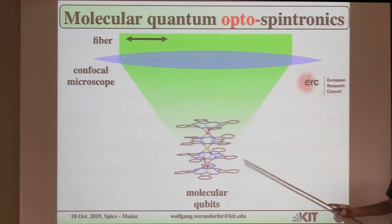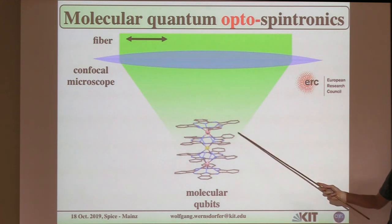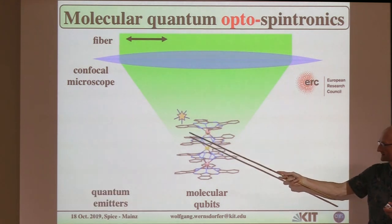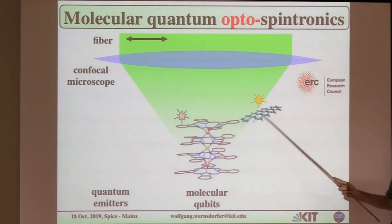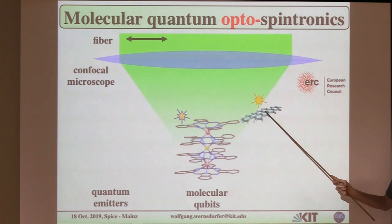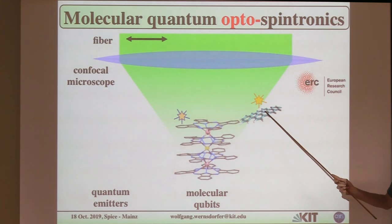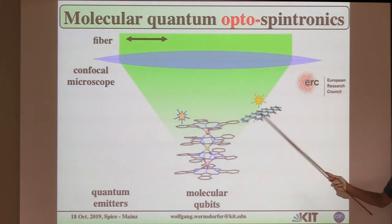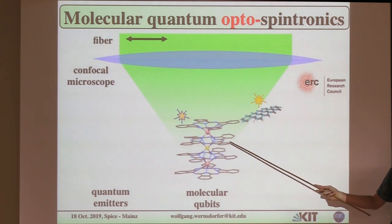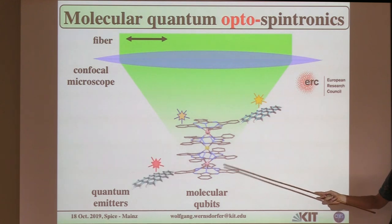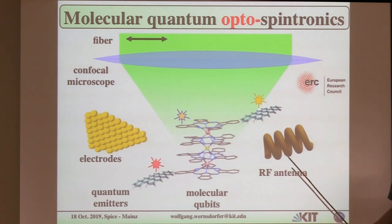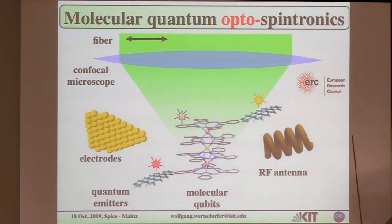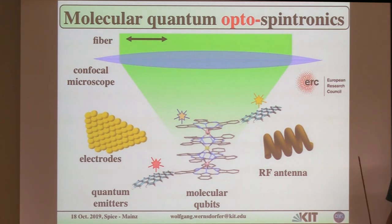Another important direction we work on — and two students here showed you a poster about this — is reading out these systems in other ways, for example optically. We want to use quantum emitters, which can be ligands or other attached ligands, to read out the spin systems. Then we want to use our tools of source and drain electrodes, RF antennas, and so on to make more complicated games in the future.